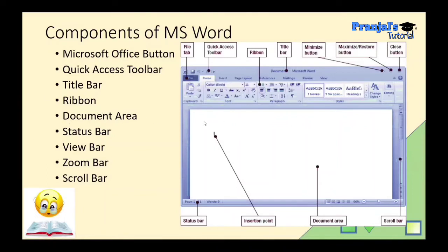Then we have the Document Area — this is the area where we can add and type our content. Below the document area is the Status Bar. The Status Bar shows information such as page 1 of 1 and word count (Words: 0), so we can see the total number of pages and words in our document.